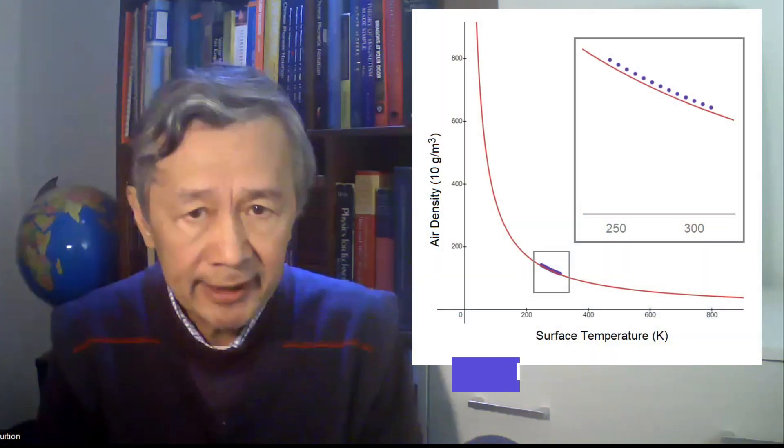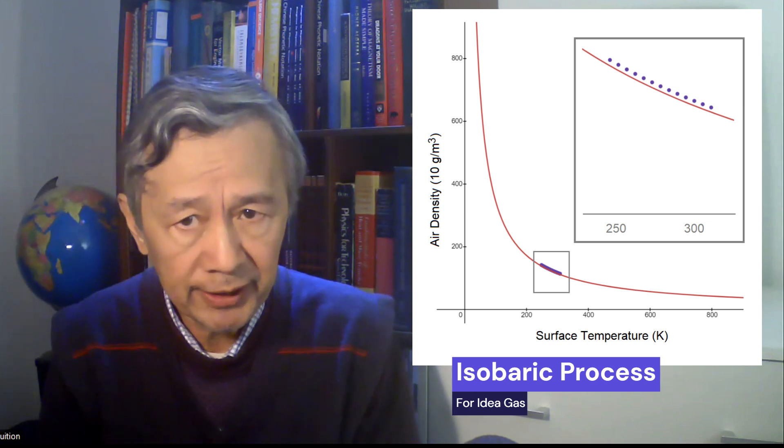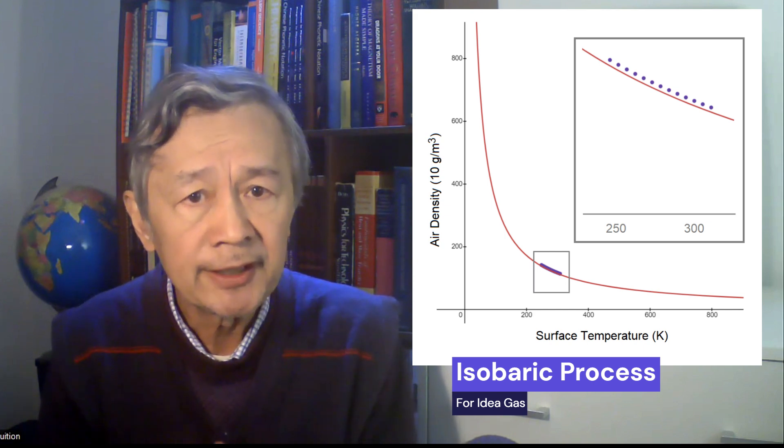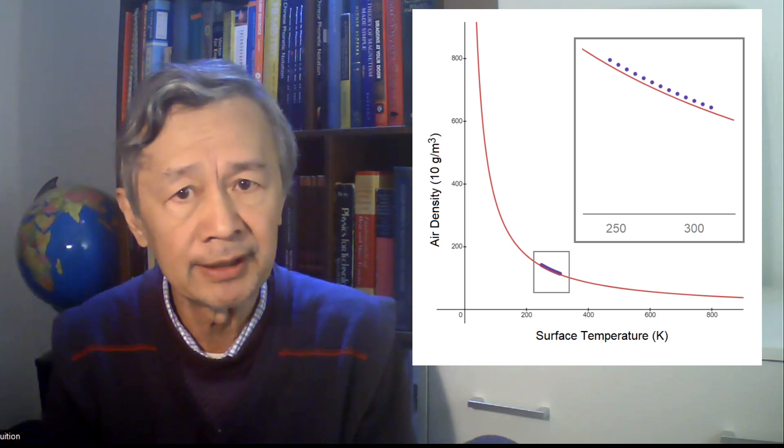Consider a small area near the surface, such as a football ground. According to the ideal gas law, the product of the air temperature near the surface and the air density must be a constant if air pressure is fixed, as shown in this diagram. To be exact, the dependence of air density on surface temperature is reciprocal. That's to say, if air pressure is fixed, the air density near the surface would decrease as the local surface temperature increases.